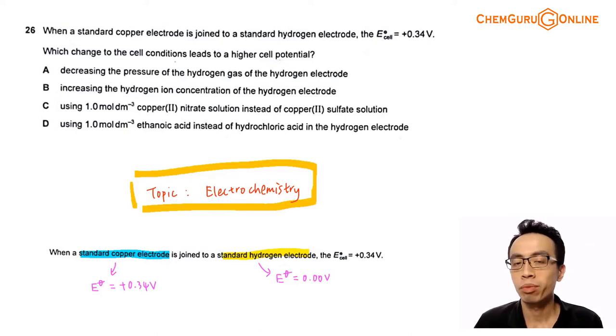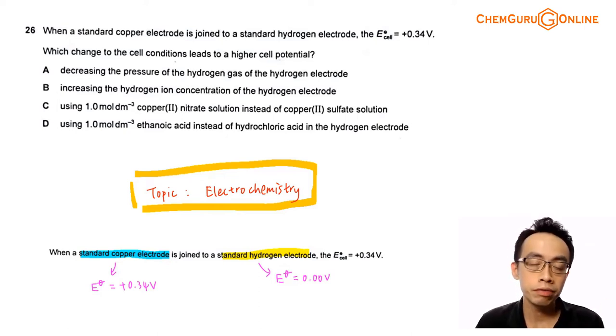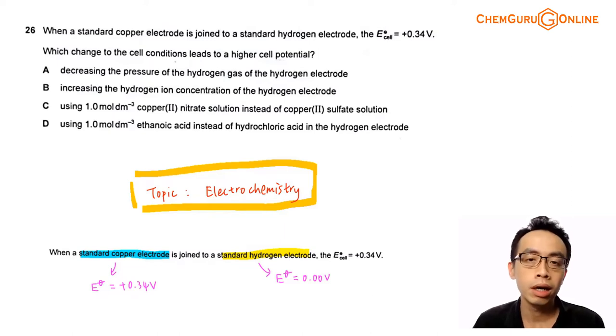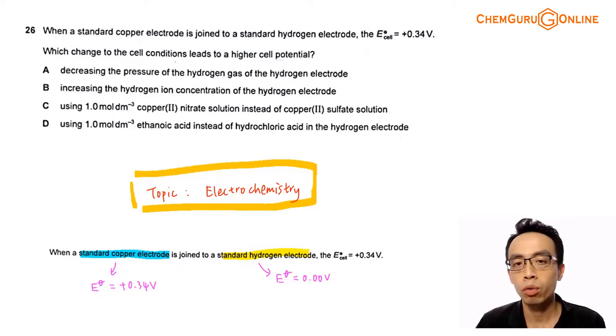Hello everyone, this is Maverick Praud, the chemistry guru. In this video, we want to discuss the suggested solution for 2021 A-levels H2 chemistry paper 1, question 26.